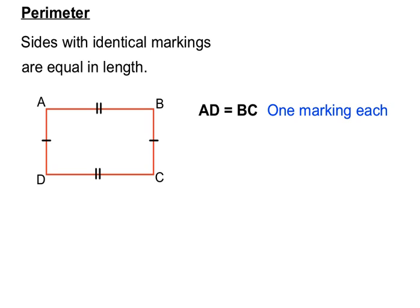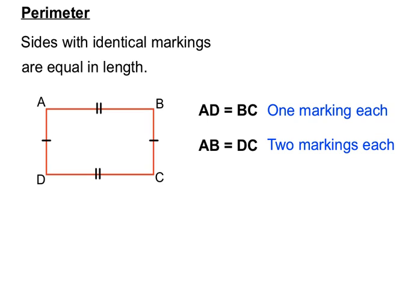Because of the double markings we're also able to say that AB across the top is equal to DC across the bottom. They have two markings each, so we know they're equal in length — we can trust those geometrical markings.